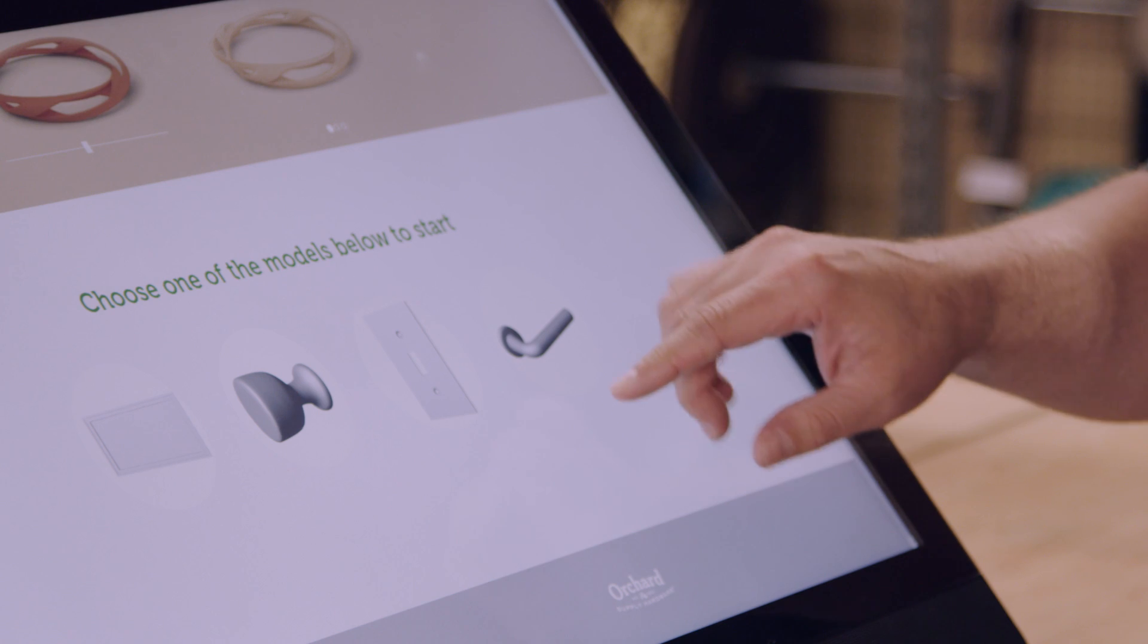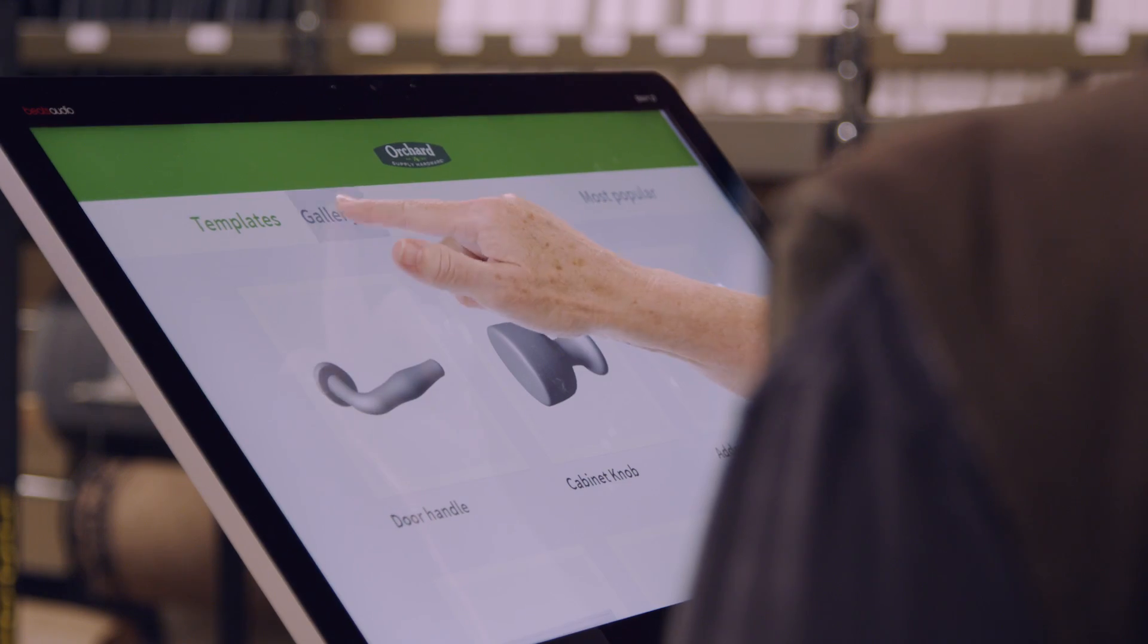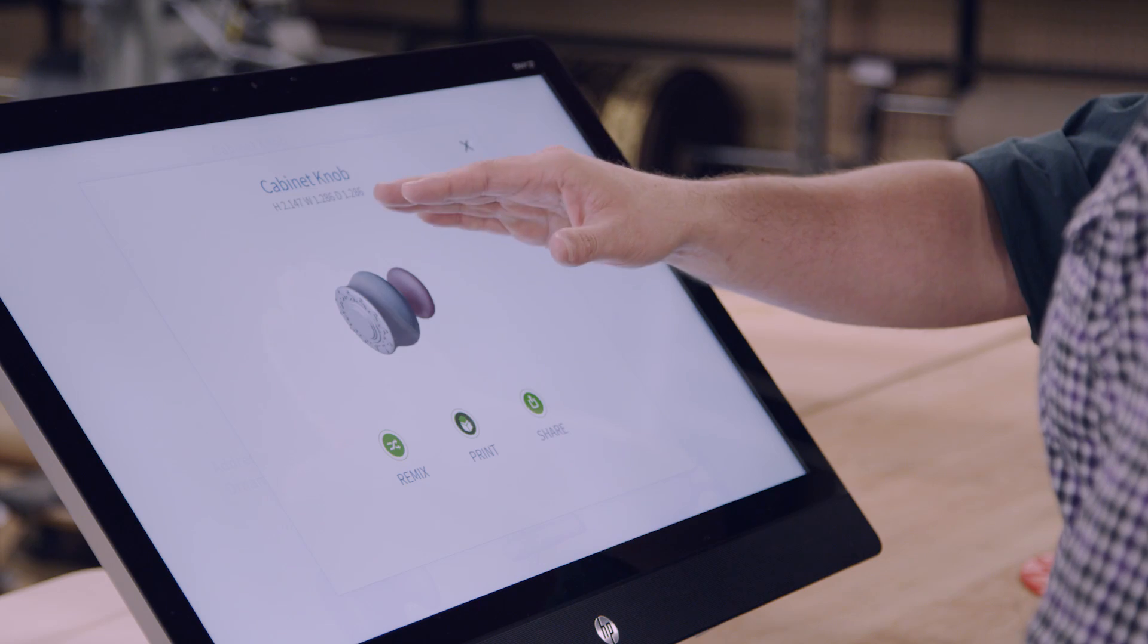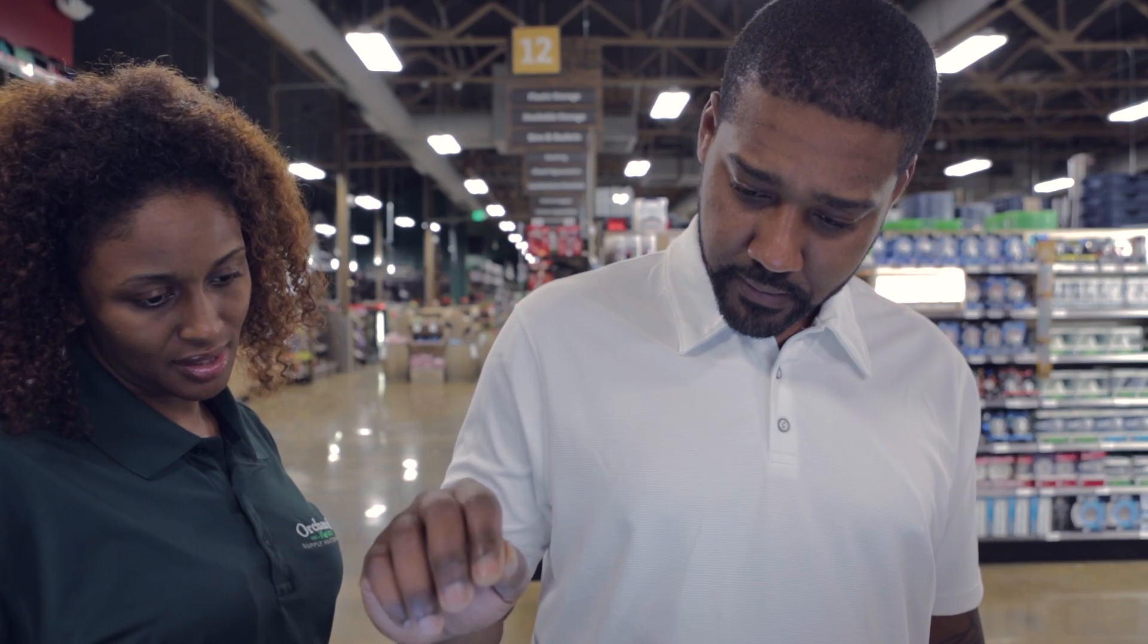People want to create things that they see in their head, be able to put it in some sort of digital format and turn it into something real. It's actually going to show you the height, the width, and the depth. You can use this slider. That's cool. If we wanted an Irish clover, we could put that in too. Exactly.